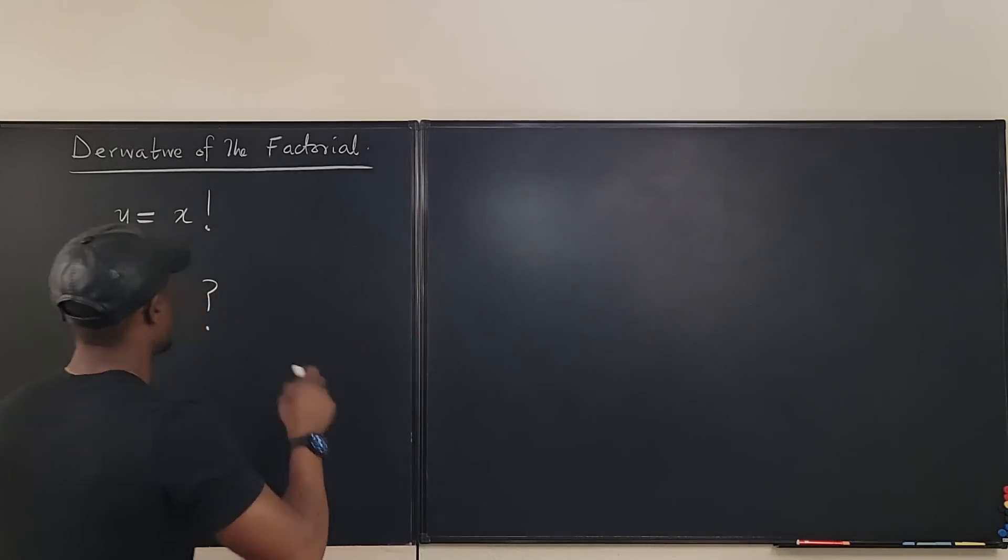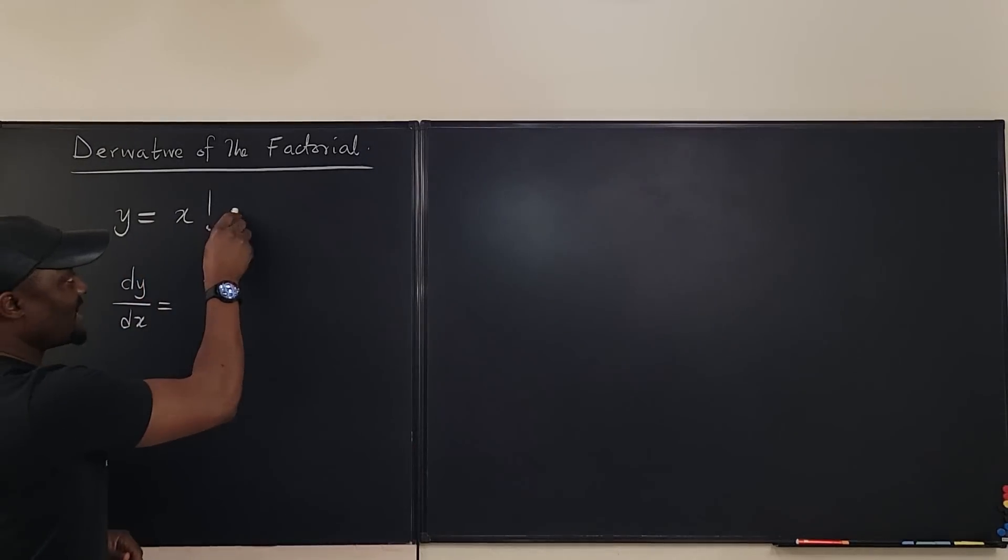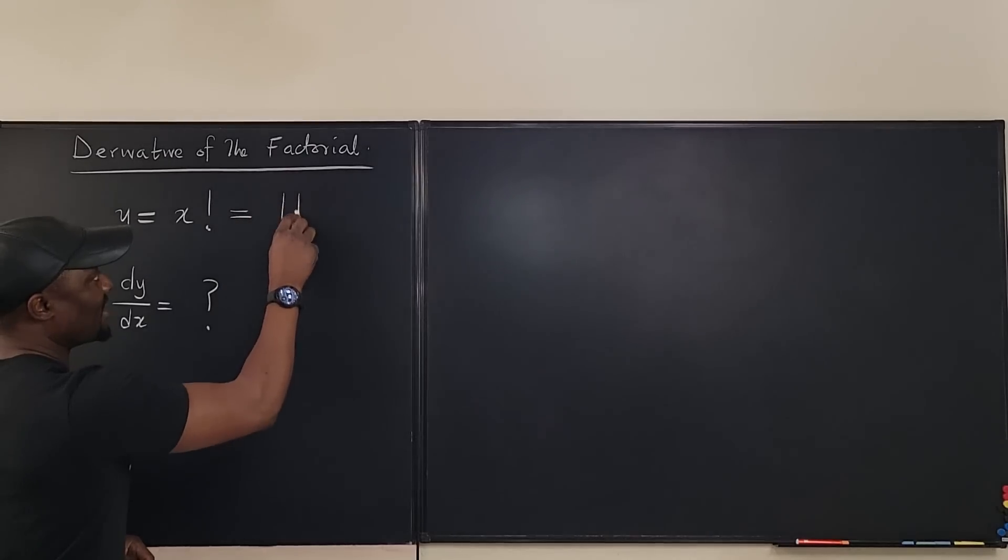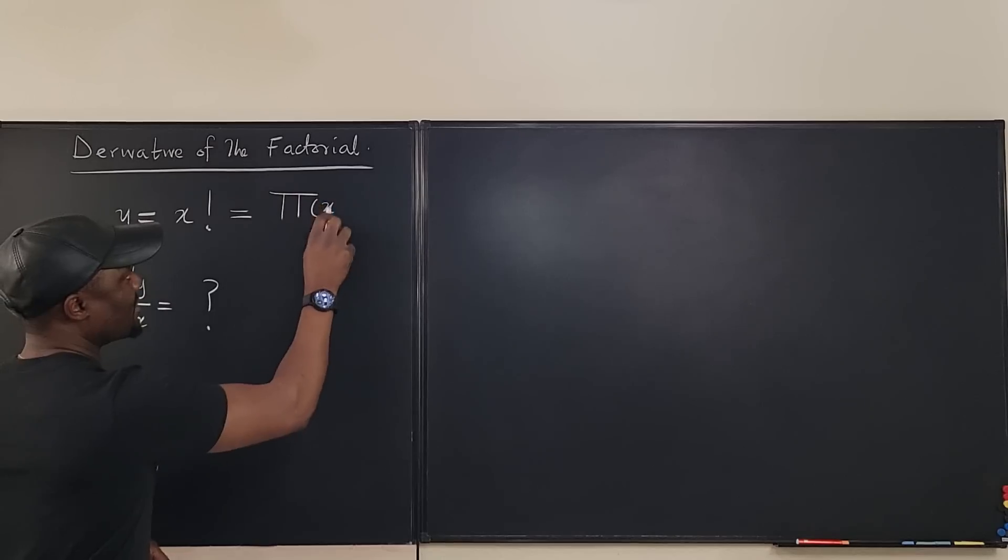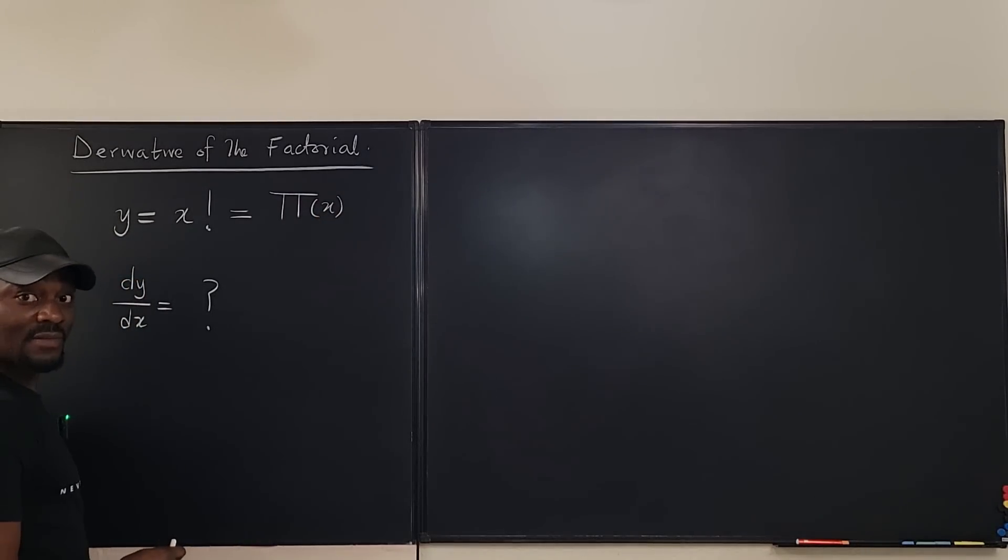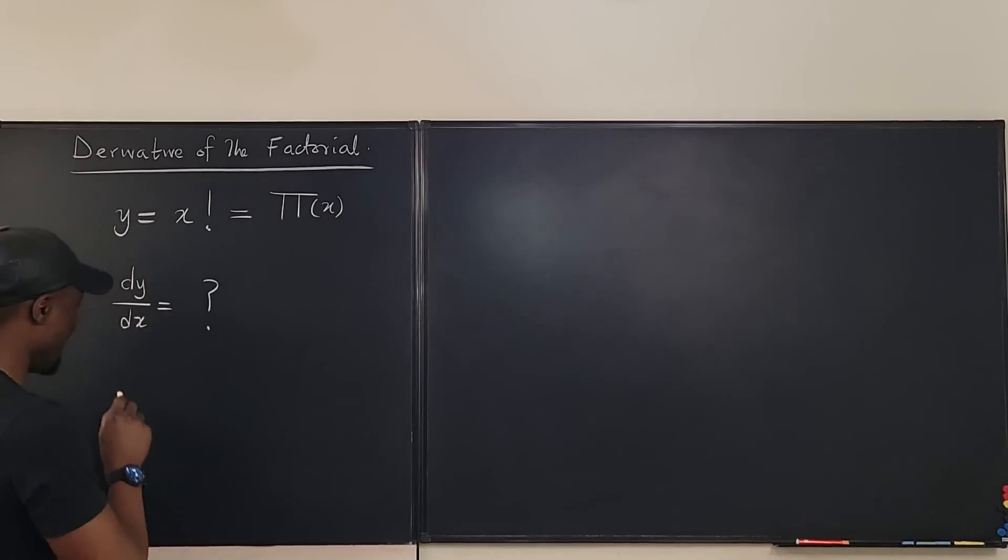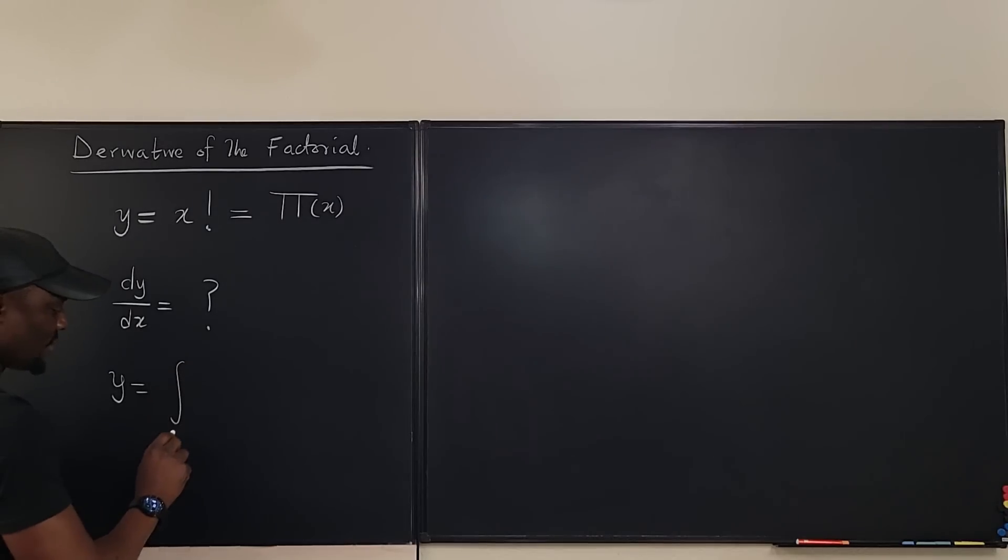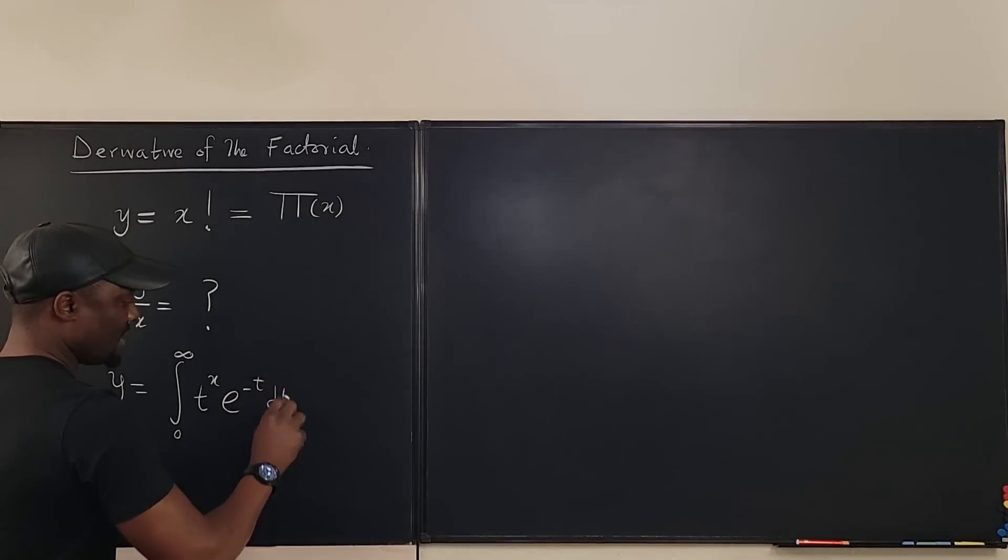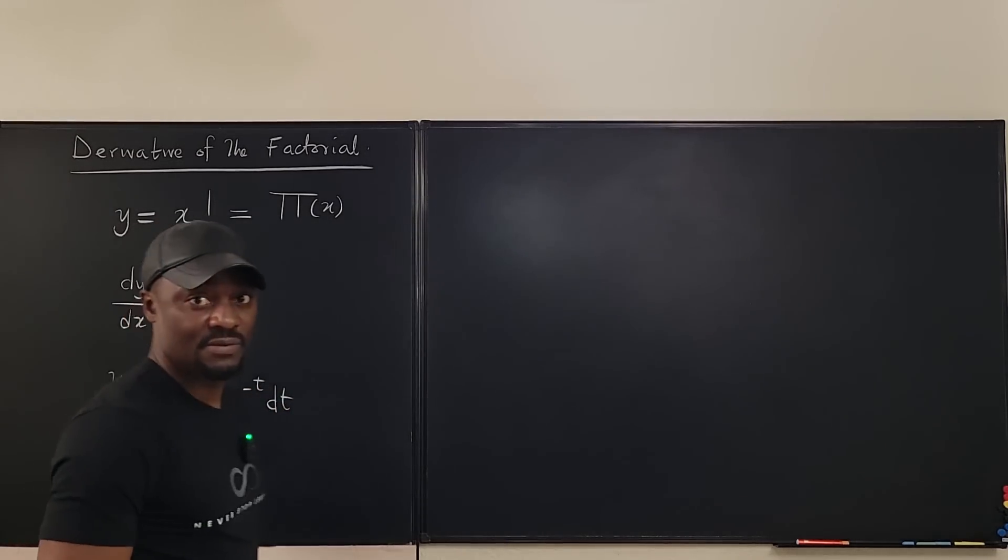So it doesn't matter. We're differentiating this. So this is the same thing as the pi of x, right? And we know what this is. So we can easily say that y is equal to the integral from 0 to infinity of t to the x e to the negative t dt. This is what I just need to differentiate.